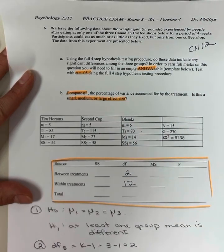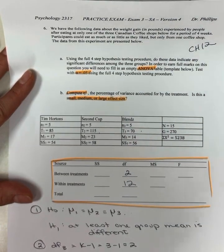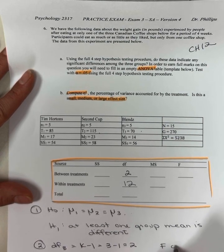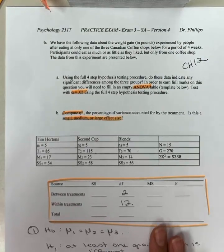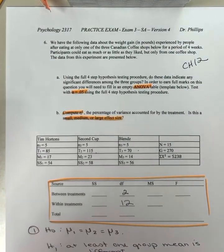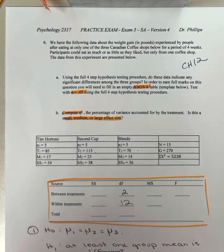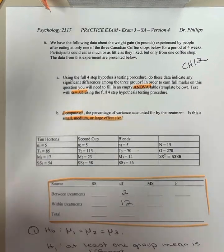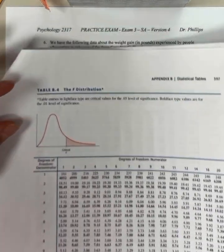We'll come back and fill in the rest later. So we need our F critical. So we go to table B4.